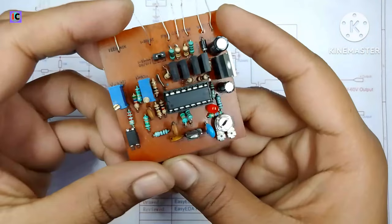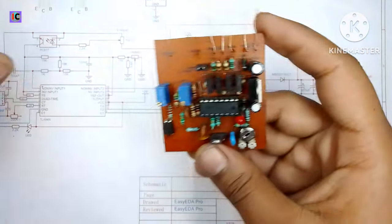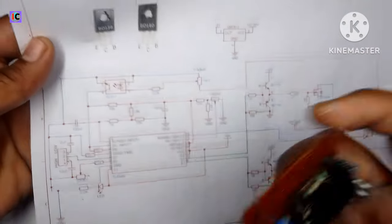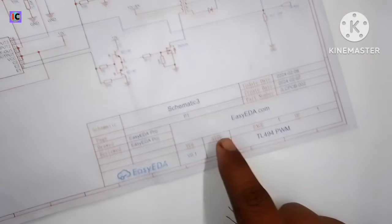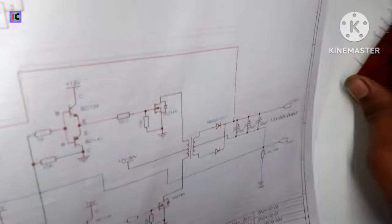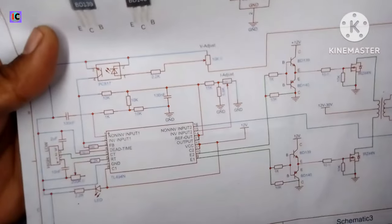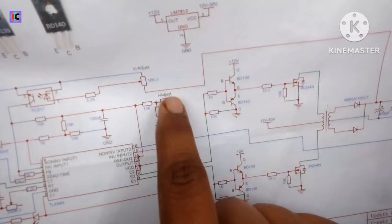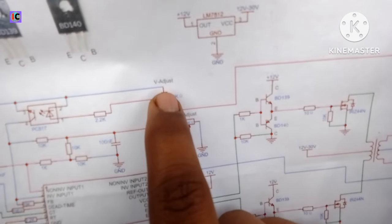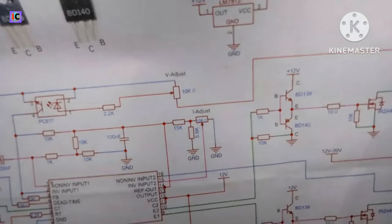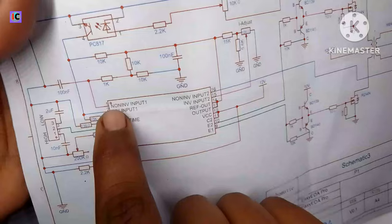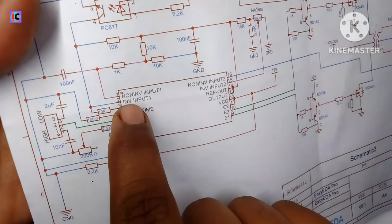The first part and main component is the optocoupler which is used for voltage feedback. This is the 10 kilo ohm potentiometer for adjusting the output voltage.